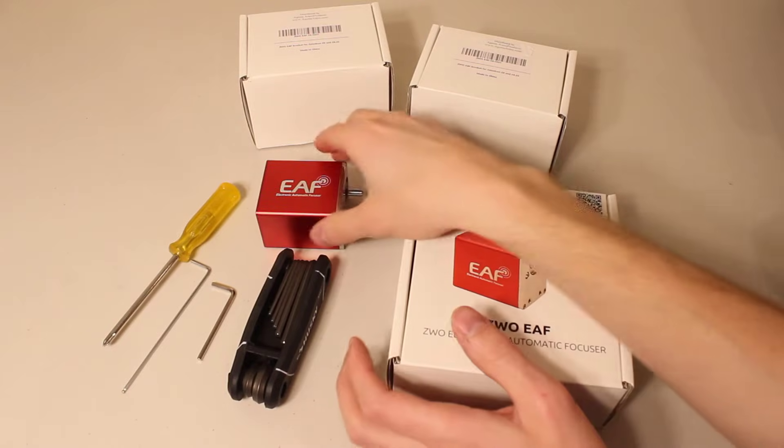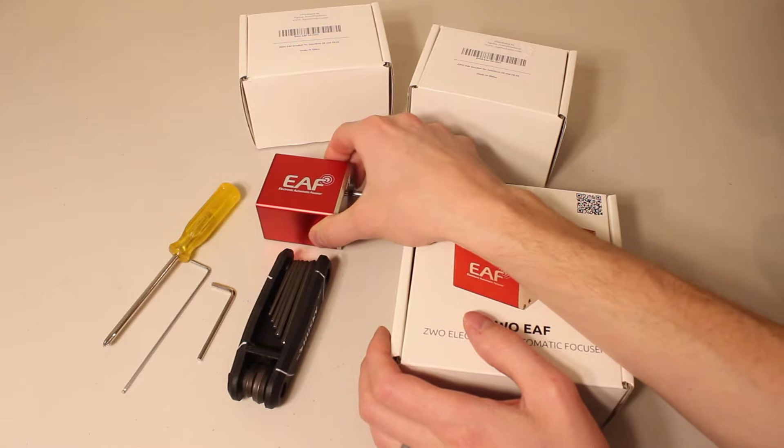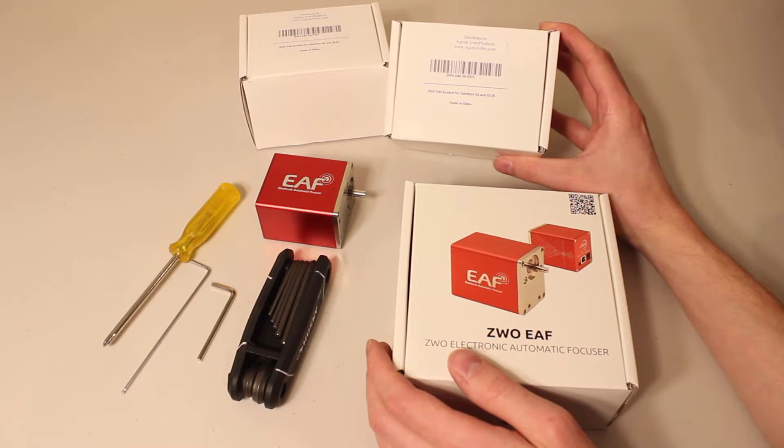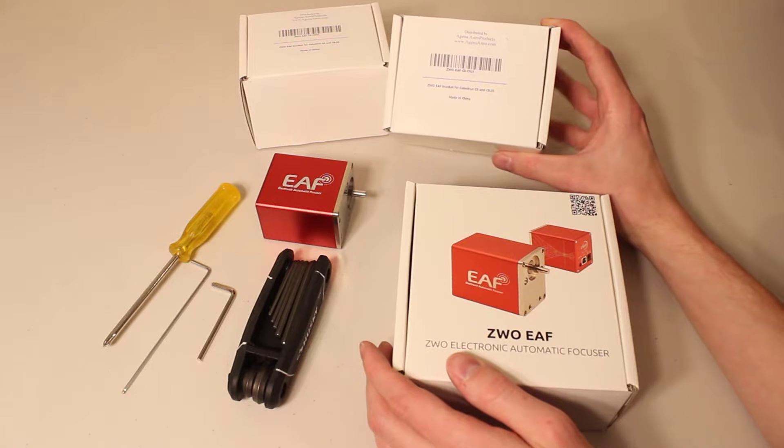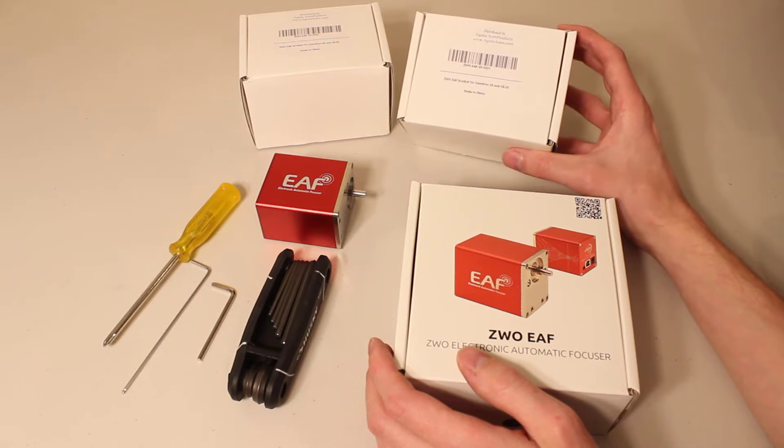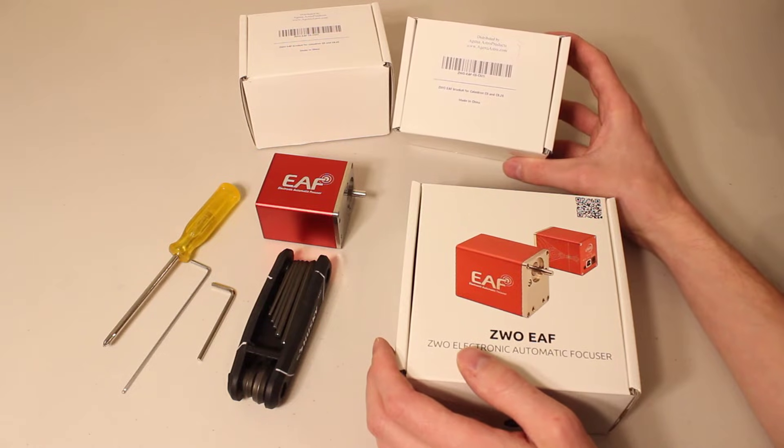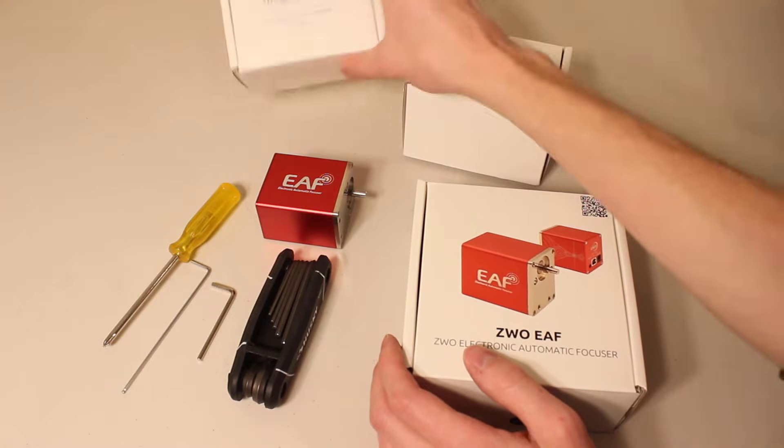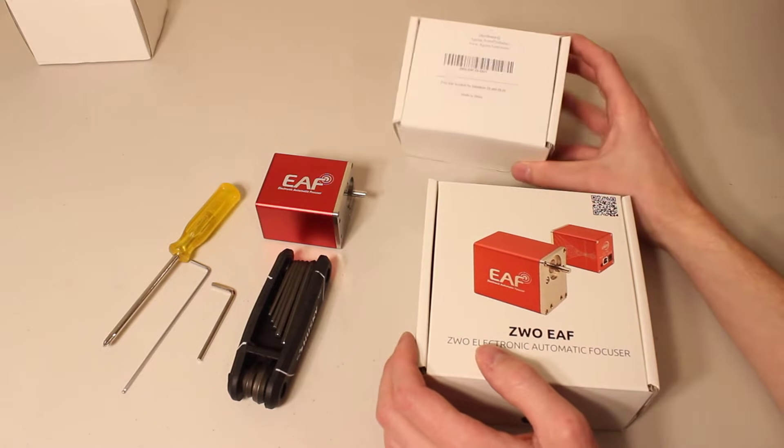So what do you need to get your EAF installed to your Schmidt-Cassegrain? Number one, you're going to need the new ZWO EAF bracket for the Celestron C8 and C9 1⁄4". I've been patiently waiting for this for about three months, it came out a couple weeks ago, so I bought two of them right as I saw they came in stock. One for my C8, one for my RASA-8.